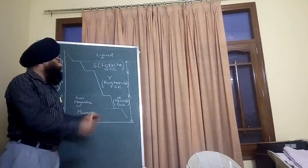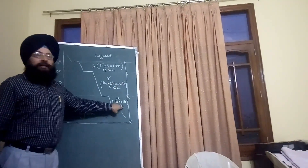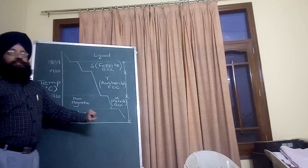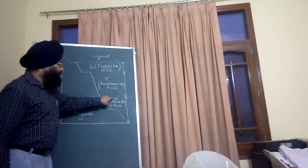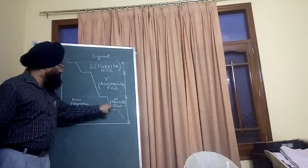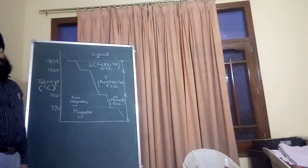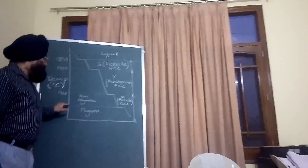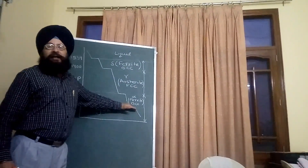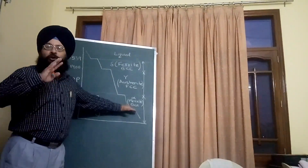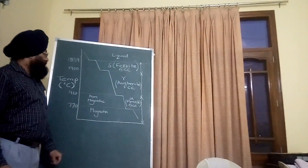Below 910 degrees centigrade, the iron is called alpha ferrite, and it has a body-centered cubic structure. Up to 770 degrees centigrade, the iron is non-magnetic in nature.